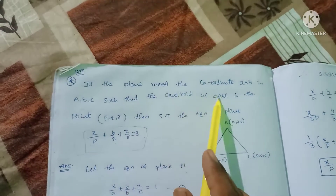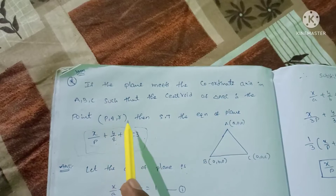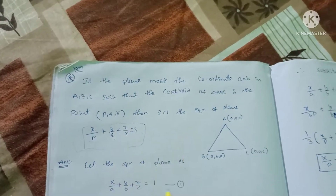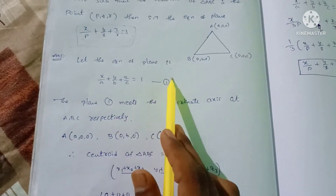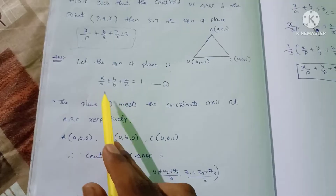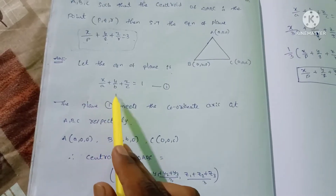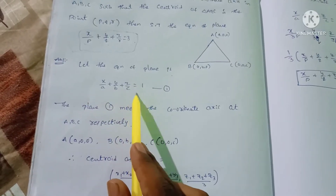The centroid of triangle ABC is (p, q, r). Let's solve this problem. Let the equation of the plane be x/a + y/b + z/c = 1.